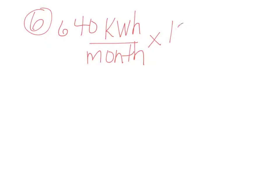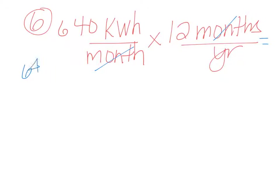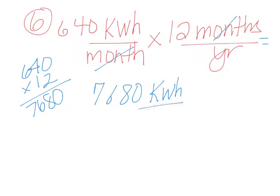And we're going to multiply this by 12 months per year. So now our months cancel. And we're going to end up, and again, you can do your math on the side. So go ahead and do your math on the side here. And when you do your math on the side, you get 7680.